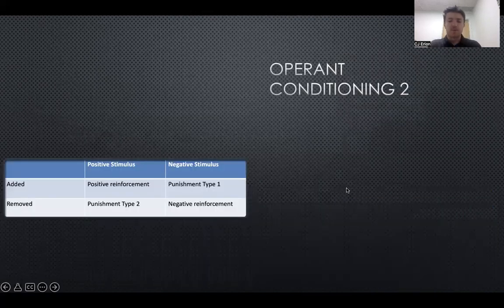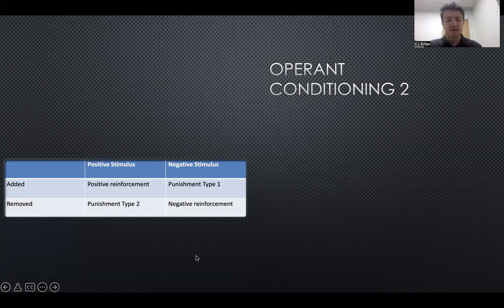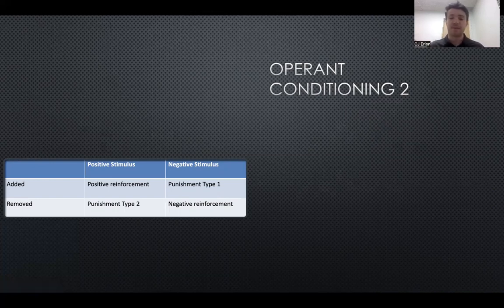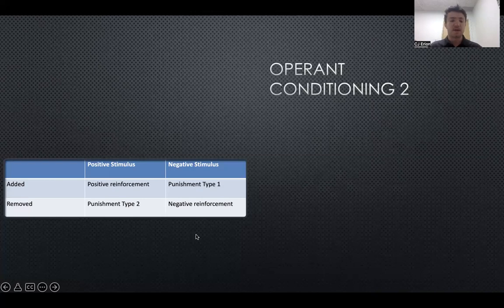Let's go over what these are called in the realm of operant conditioning. The most common misconception is probably negative reinforcement. We hear the word 'negative' and think it must be some kind of punishment, but it's not. When we add a positive stimulus, that's called positive reinforcement, and it should increase the behavior — the cookie in the previous example. Negative reinforcement is taking away something the individual doesn't like; chores was the example of that.